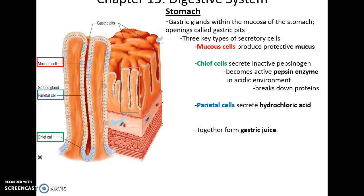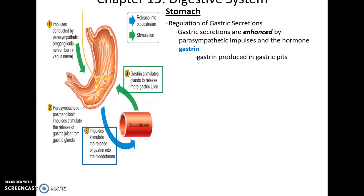The three main kinds of secretory cells include: mucous cells that produce mucus; chief cells that produce pepsinogen, an inactive enzyme that becomes active pepsin in an acidic environment to break down proteins; and parietal cells that produce the hydrochloric acid of the gastric juice. Gastric secretions are enhanced by parasympathetic impulses as well as the hormone gastrin, which is produced by the gastric mucosa — the stomach stimulates itself by producing its own hormones.